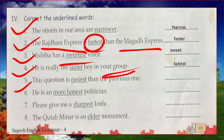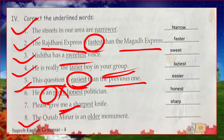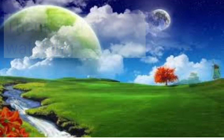'This question is easiest than the previous one' — comparison is made, so it should be 'easier' (comparative). 'He is a more honest politician' — 'an' is coming, so positive degree 'honest' is correct. 'Please give me a sharpest knife' — 'a' is coming, so it should be 'sharp' (positive degree). 'The Kutub Minar is an older monument' — 'an' is coming, so positive degree 'old' should be used.